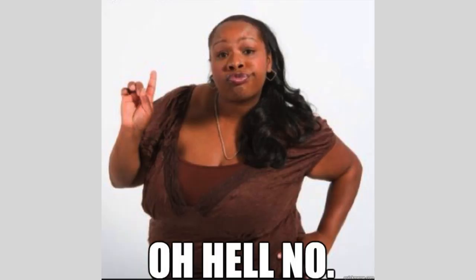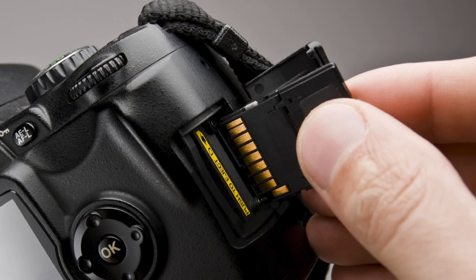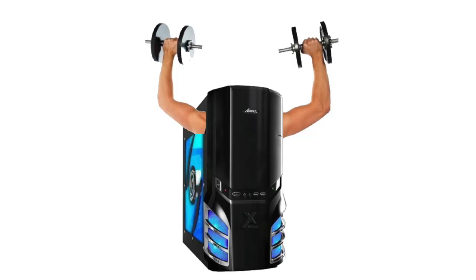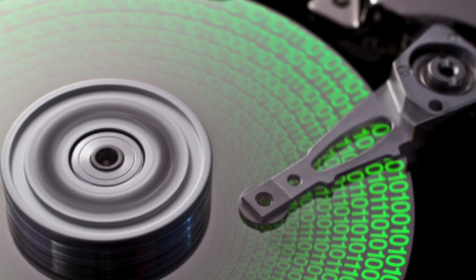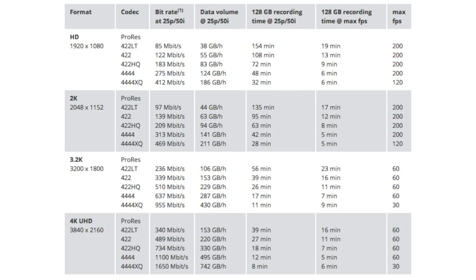Some of you are saying, I edit just fine without a Thunderbolt drive or an SSD, and that's true. But you're probably editing the H.264 transferred right from your camera's SD card, and your computer is doing all the heavy lifting to decompress those frames in real time. So the data coming off the hard drive is just like the slow media in your camera. If you're editing in 2K or 4K in a native edit codec, you will definitely need a faster drive.